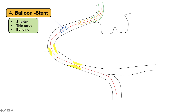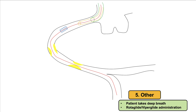The fourth major category of techniques is changing the balloon or stent being delivered. A shorter balloon or shorter stent is easier to deliver than a longer one. For stents, using a thinner-strut stent is easier to deliver — for example, the Osiris stent has the thinnest struts and is the most deliverable in challenging anatomy. Sometimes one can bend the stent shaft; however, this may carry some risk of detachment of the stent during delivery attempts.